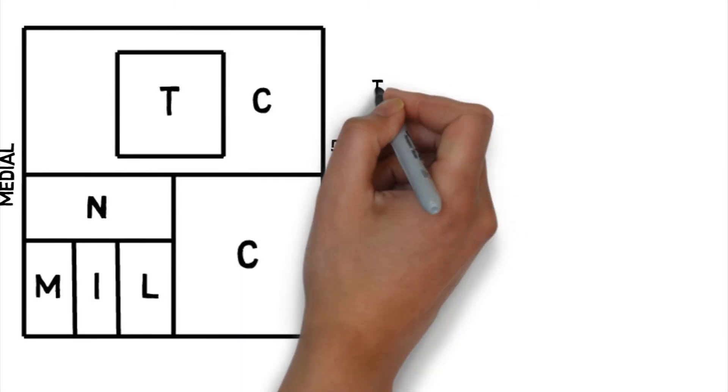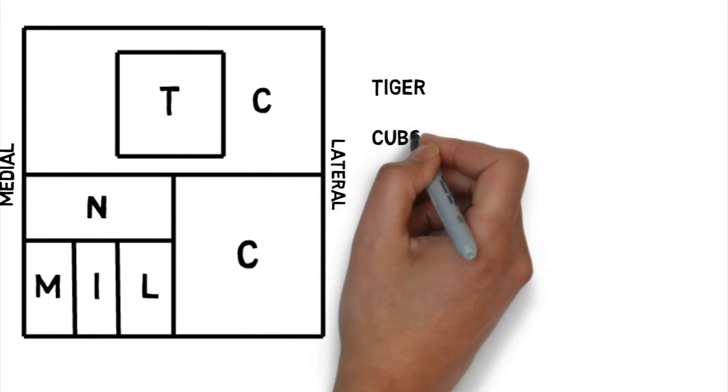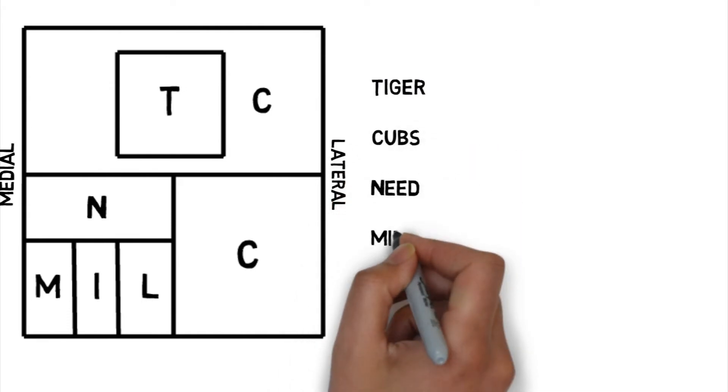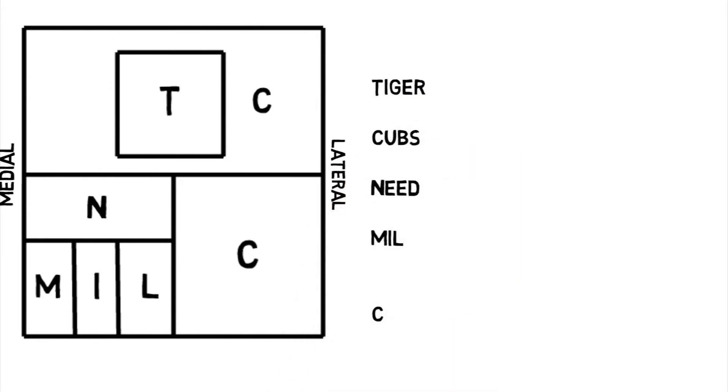And so your mnemonic is going to be Tiger Cubs Need Milk, and we're going to use a C instead of a K.